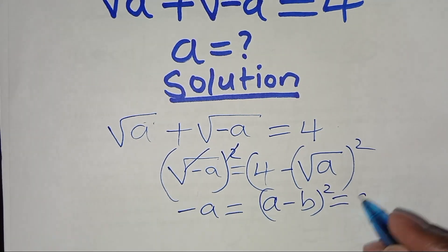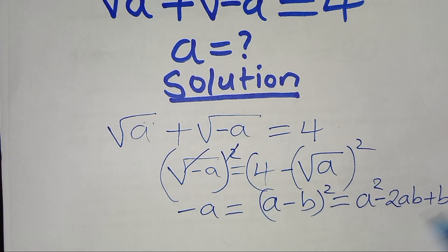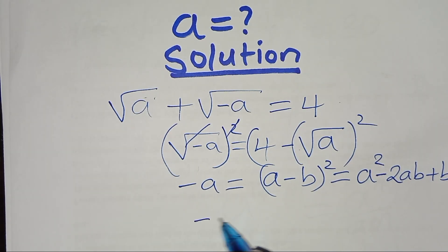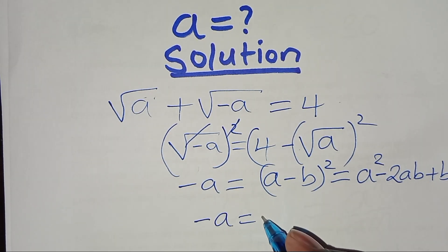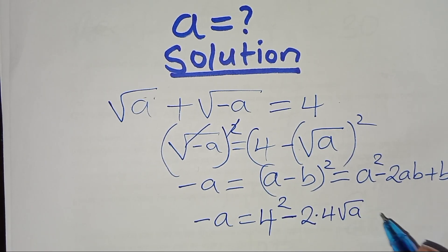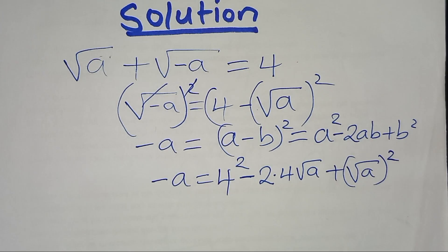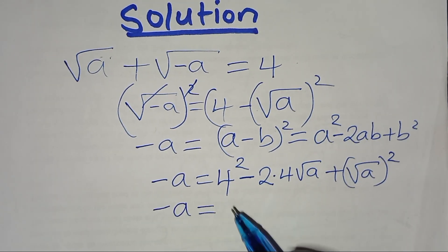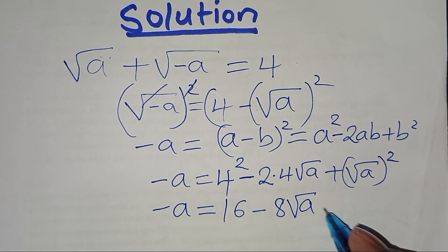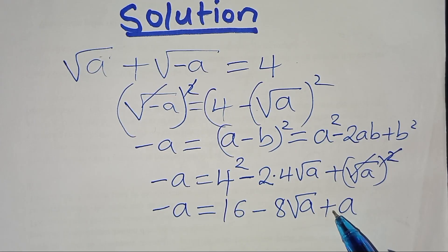We expand (4 − √a)² using the identity (a − b)² = a² − 2ab + b². So (4 − √a)² = 4² − 2·4·√a + (√a)² = 16 − 8√a + a. Therefore: −a = 16 − 8√a + a.